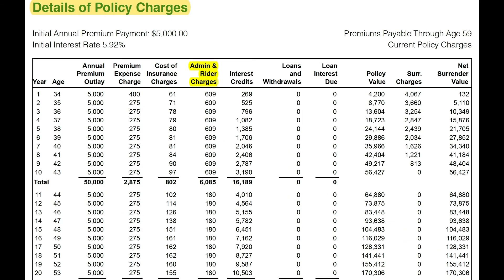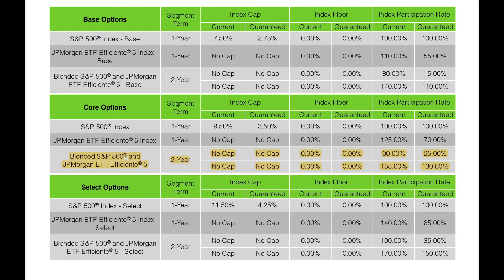Interest crediting — Symmetra also has its own proprietary index, and they give you three different options with their indices: the base, core, and select options. The base strategies have lower participation rates than the other strategies, but they guarantee the payment of an additional index credit applied to your account value at the end of every point-to-point segment. The core strategies offer you the option to select from three index strategies, and the select strategies are available at an extra cost of 1% and allow you to potentially capture higher participation.